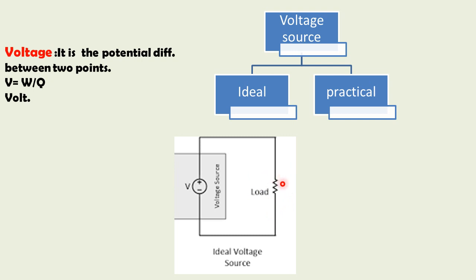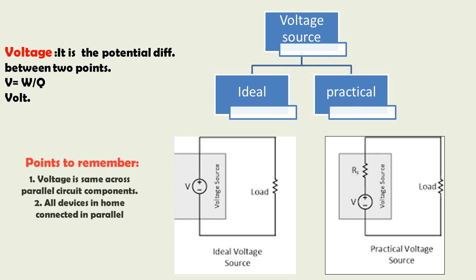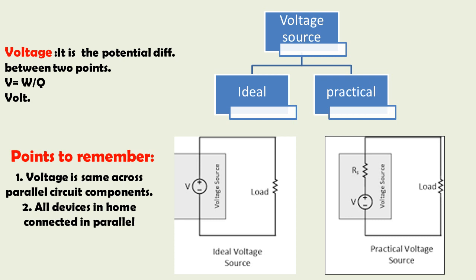For an ideal voltage source, the maximum voltage should appear across the load, hence the internal resistance should be zero. That is the ideal case, but it does not exist in practice. In a practical voltage source, the voltage source is connected with a certain internal source resistance, whose value is not zero, due to which the maximum voltage drop does not appear across the load. All the sources we use in daily life are practical voltage sources.